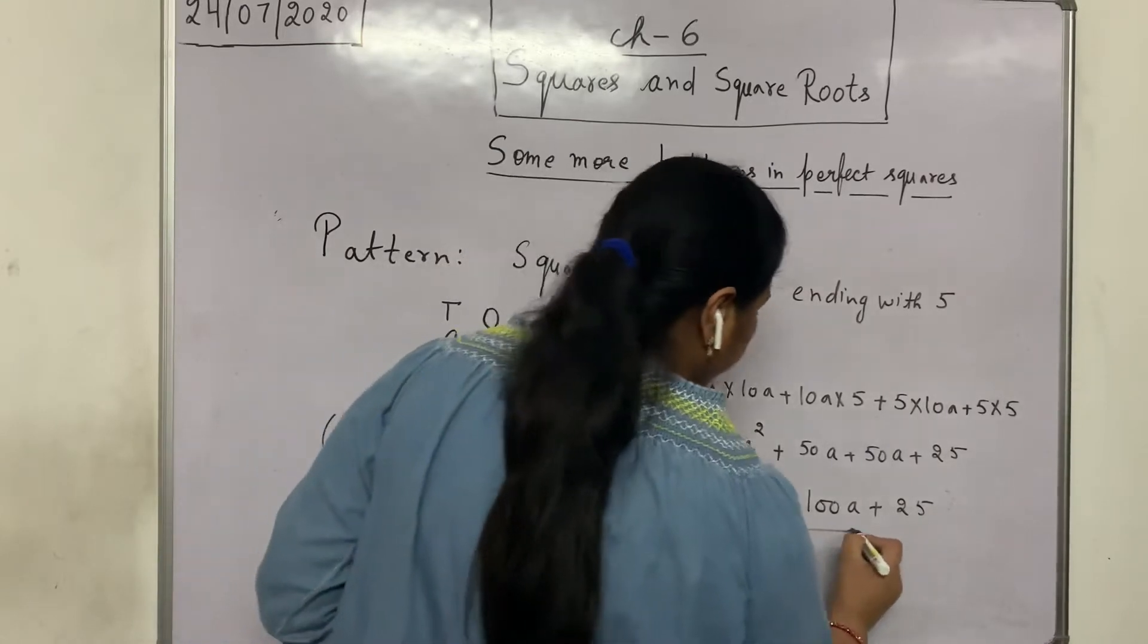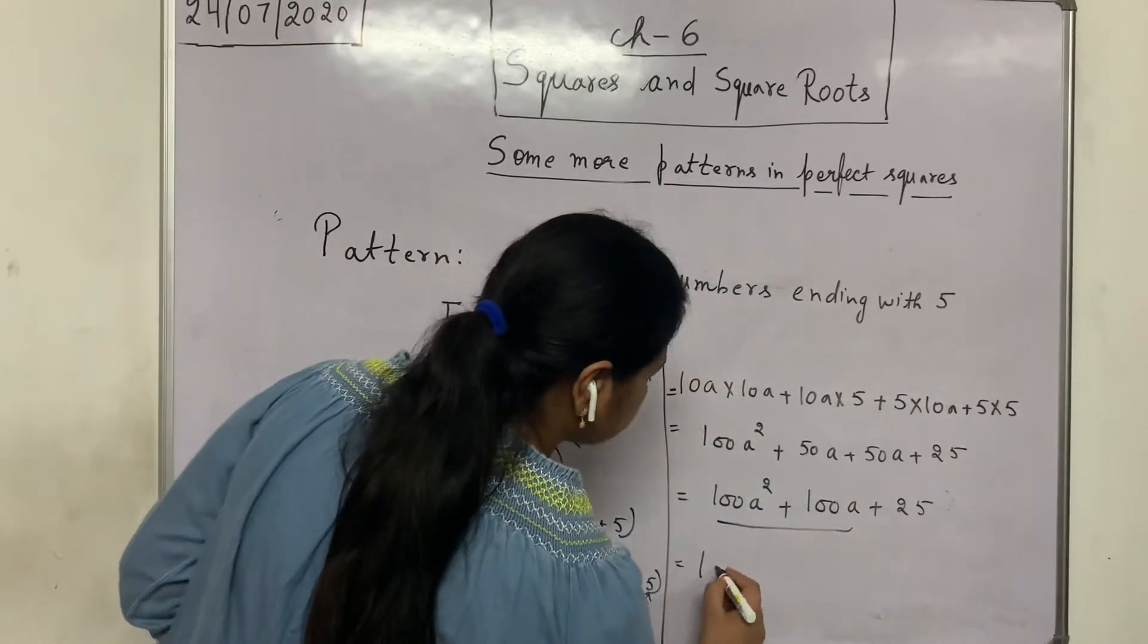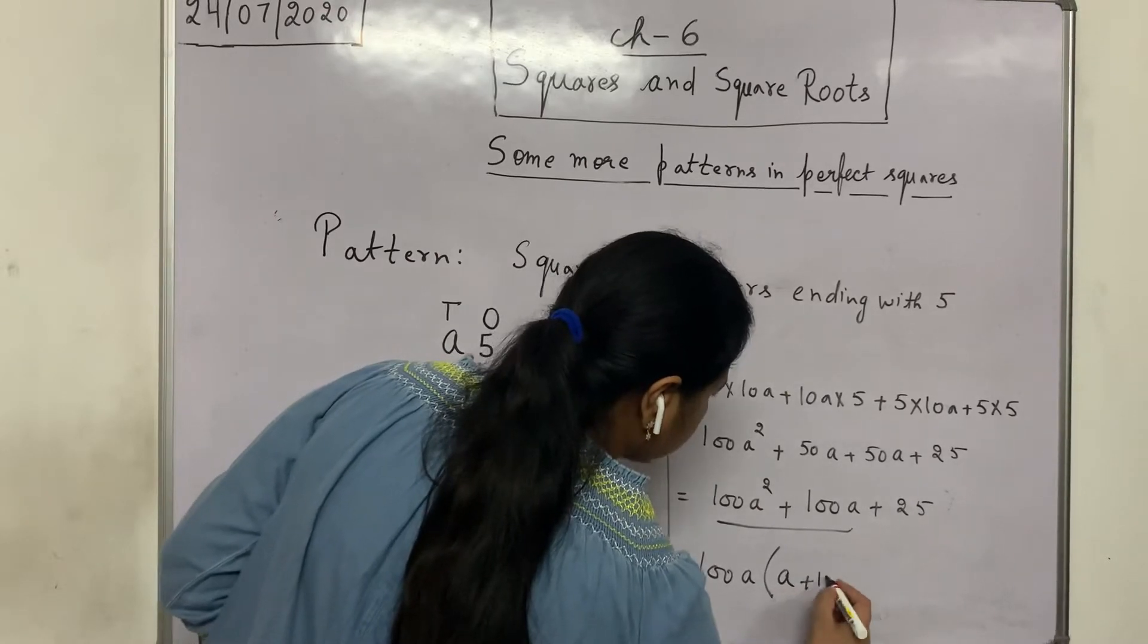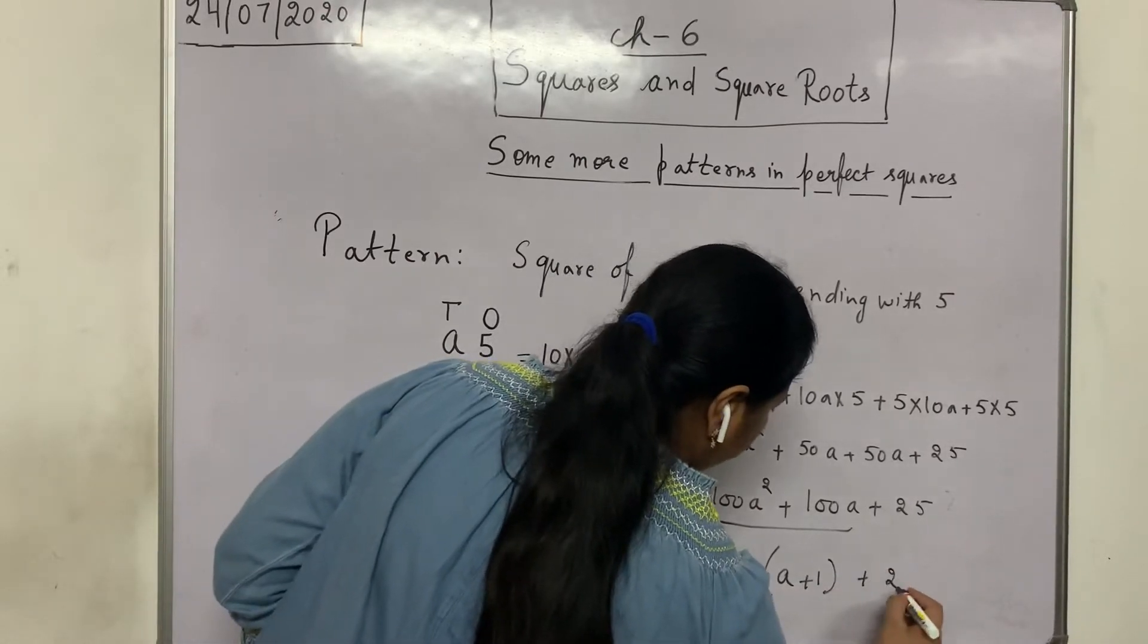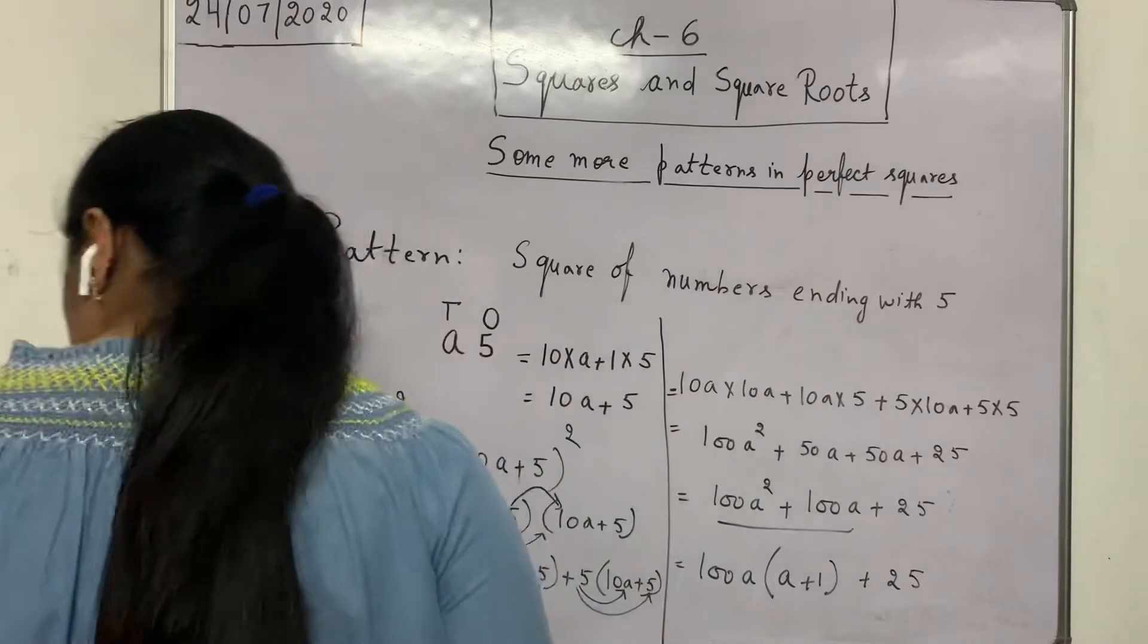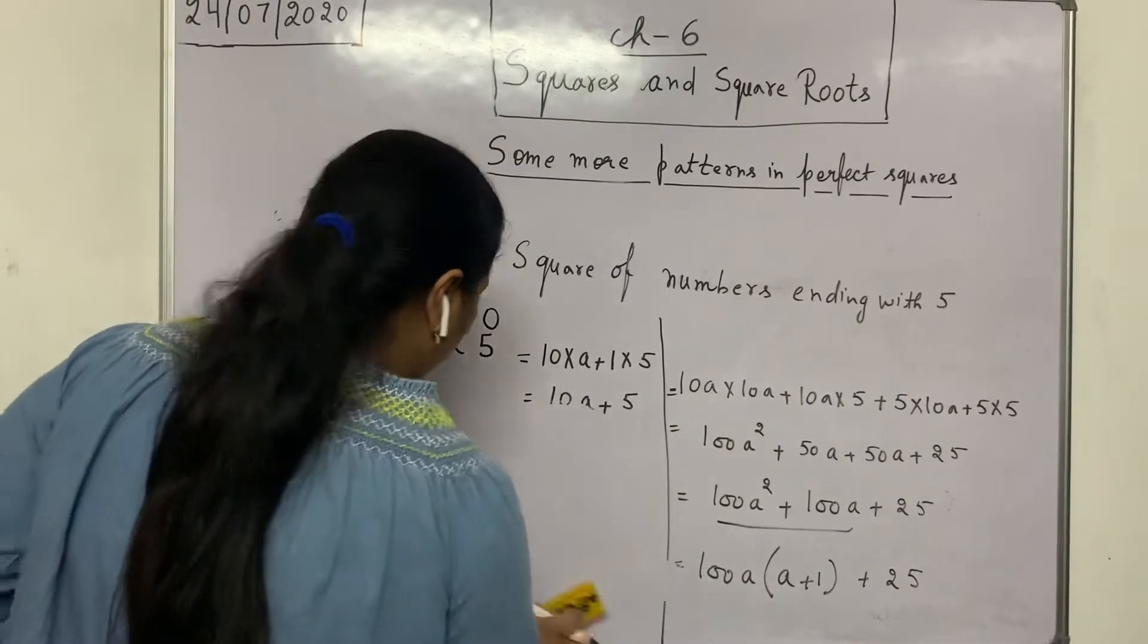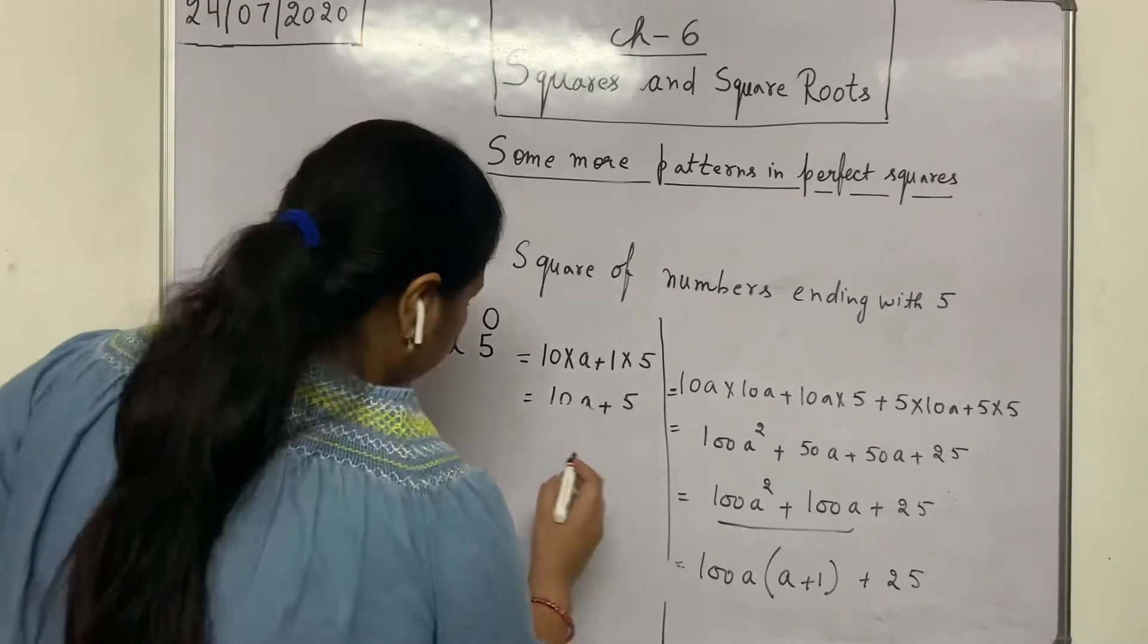After these two, the common thing is 100a. So in the bracket a plus 1 and keep this 25 separate. So this pattern in general form, how can we learn?